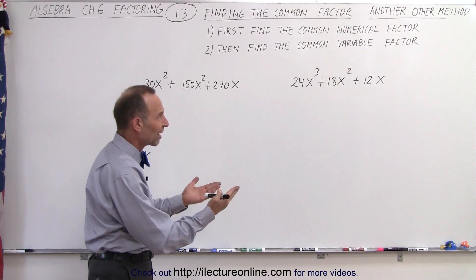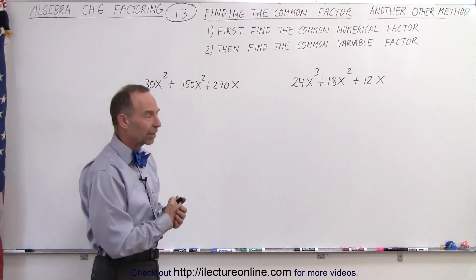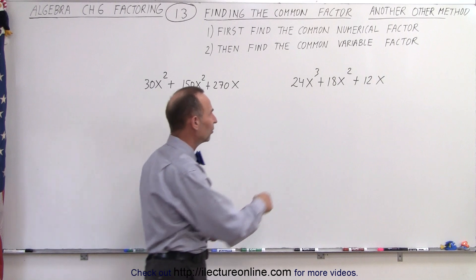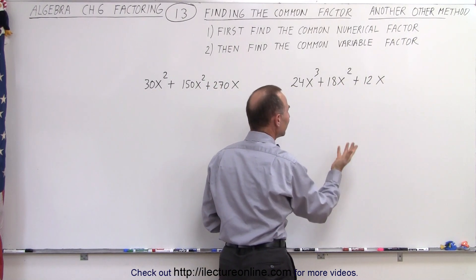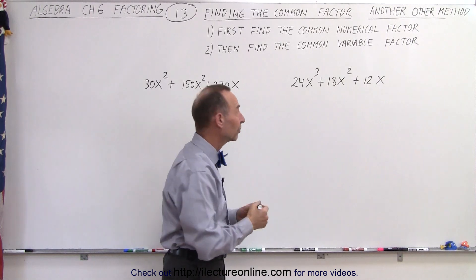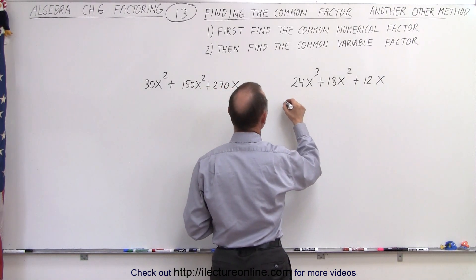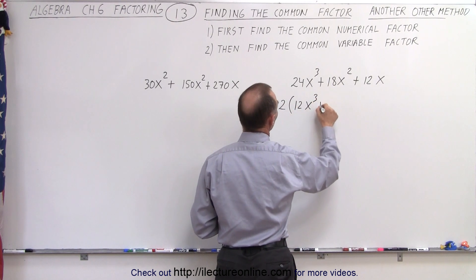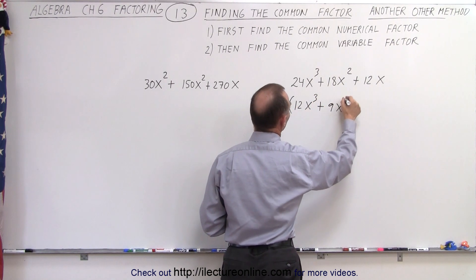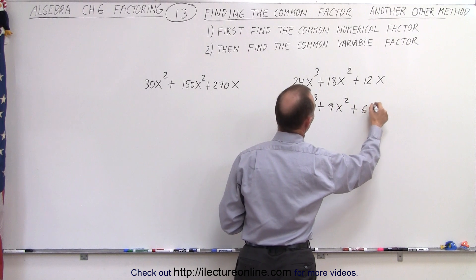What we could do is first factor out the smallest numerical factor that we can. In this case, since all the numerical coefficients are even, we can start with factoring out the number 2. So this can then be written as 2 times (12x³ + 9x² + 6x).